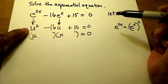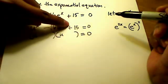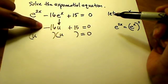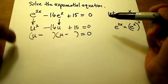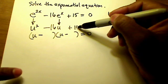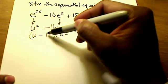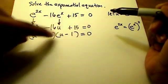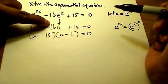So u times u will give me that u squared. Because that's a plus and that's a minus, I know that both of these signs are going to be negative. And the only way to get 15 is 15 times 1, so that when they add them up, you'll get 16, that middle term.